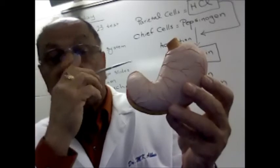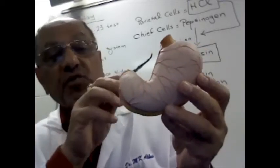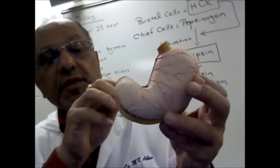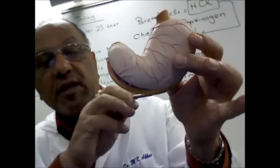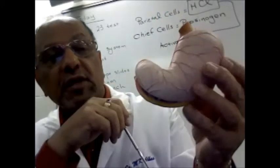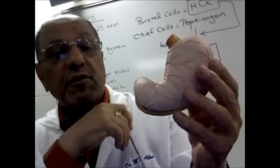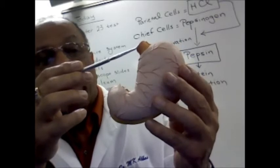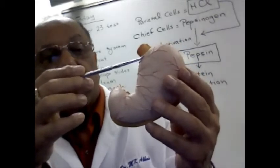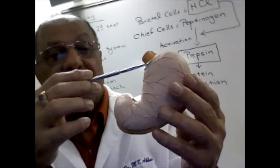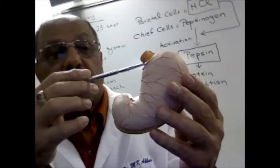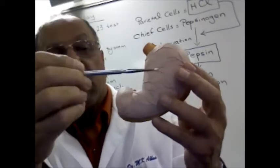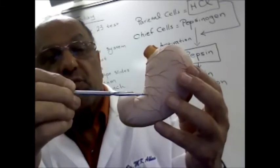Notice the shape of the stomach, and because of the shape it has two curvatures. This is known as the lesser curvature and this is known as the greater curvature. The stomach is also divided into four regions. This is the esophagus, so the area where the esophagus connects to the stomach is the cardiac region. Then this elevated area that looks like a dome is the fundus.